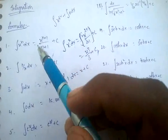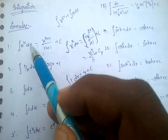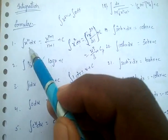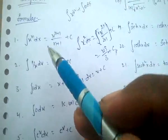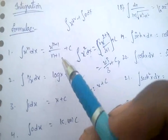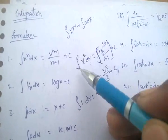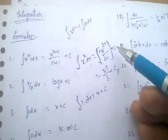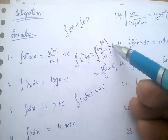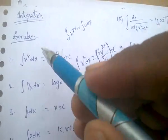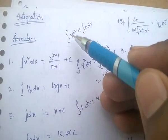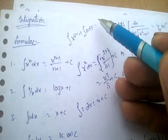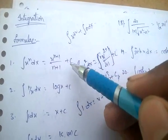Coming to the formulas: integral of x^n dx equals x^(n+1) divided by (n+1). For example, integral of x² dx equals x^(2+1) by (2+1) plus c. C is a constant — that is, integral x^n equals x^n plus integral 0 dx, which equals x^(n+1) by (n+1) plus c.